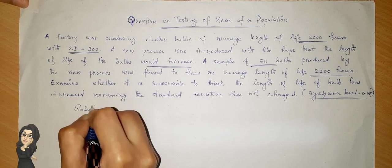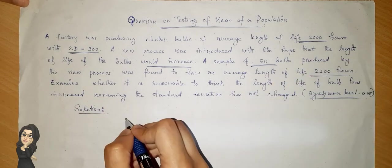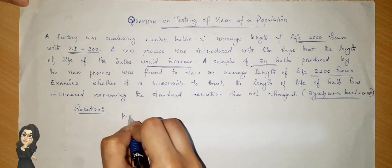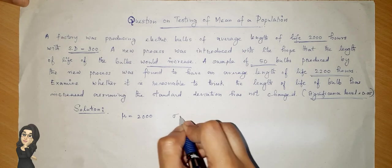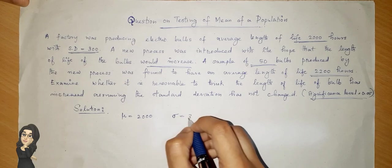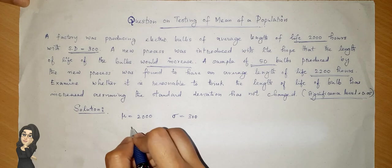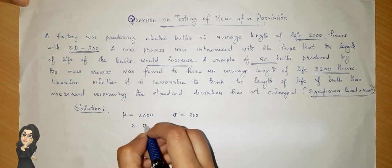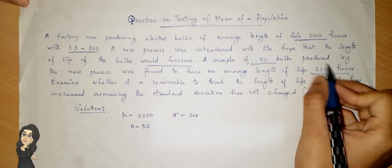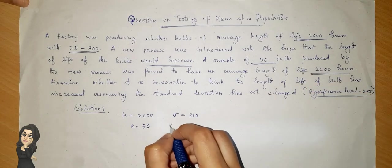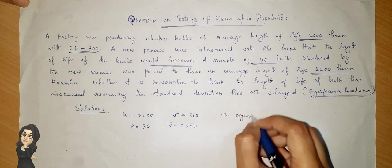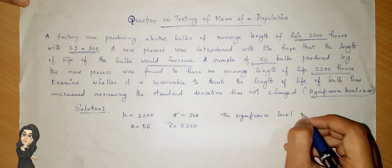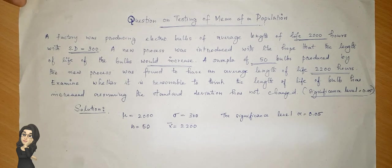Solution. The population mean mu is 2000. The standard deviation of the population, sigma, is equal to 300. A sample of size n equal to 50 is taken. The sample mean x-bar is equal to 2200 hours. The significance level alpha is equal to 0.05.